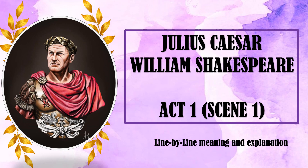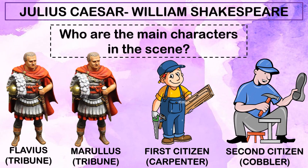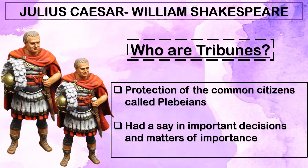As ICSE students, it is very important to note the favorite questions the ICSE council often asks. First: where does the scene take place? The scene takes place in Rome, a street. Second: who are the main characters? In Act One, Scene One, we see four important characters — the two tribunes, Flavius and Marullus, the first citizen (a carpenter), and the second citizen (a cobbler).